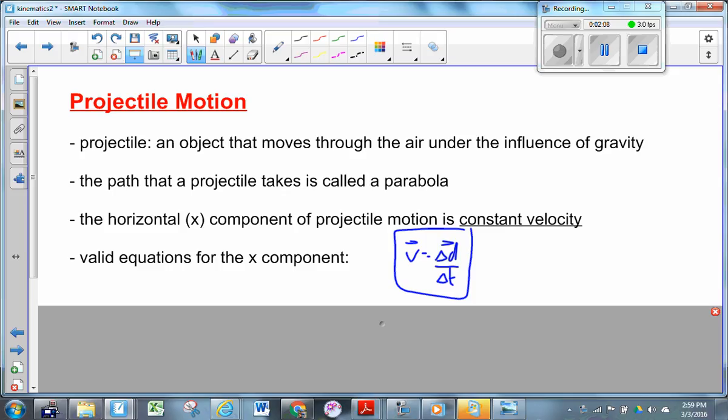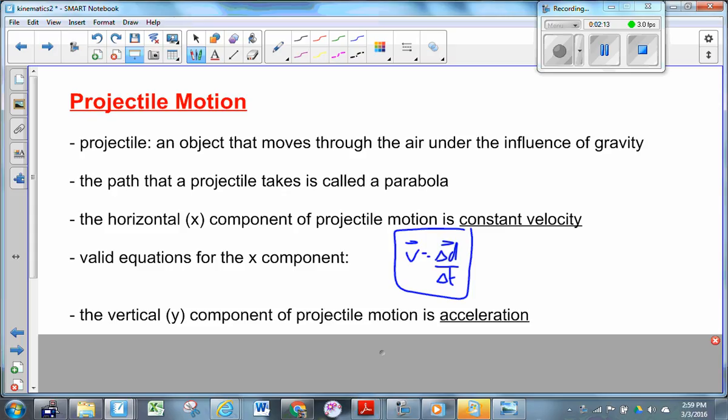The Y component, however, experiences acceleration. And why is it acceleration? Because there's a force acting, the force of gravity acting down. As the object is moving through the air, it's constantly being pulled downward and therefore constantly accelerating downward at negative 9.81 meters per second squared. Because of that, we can't use V equals D over T to describe the Y component.